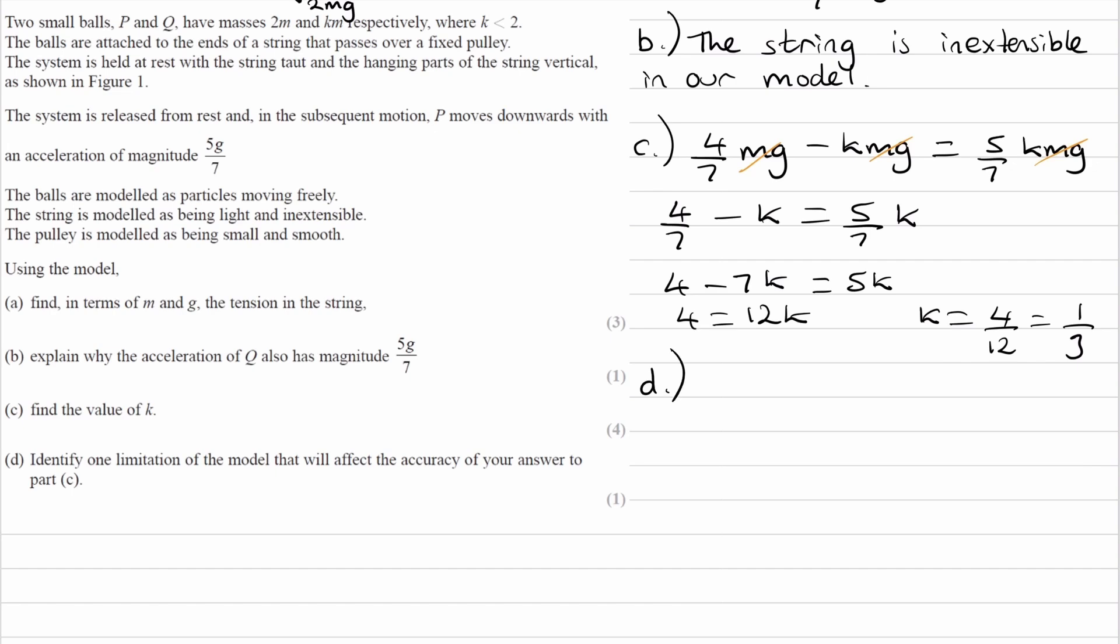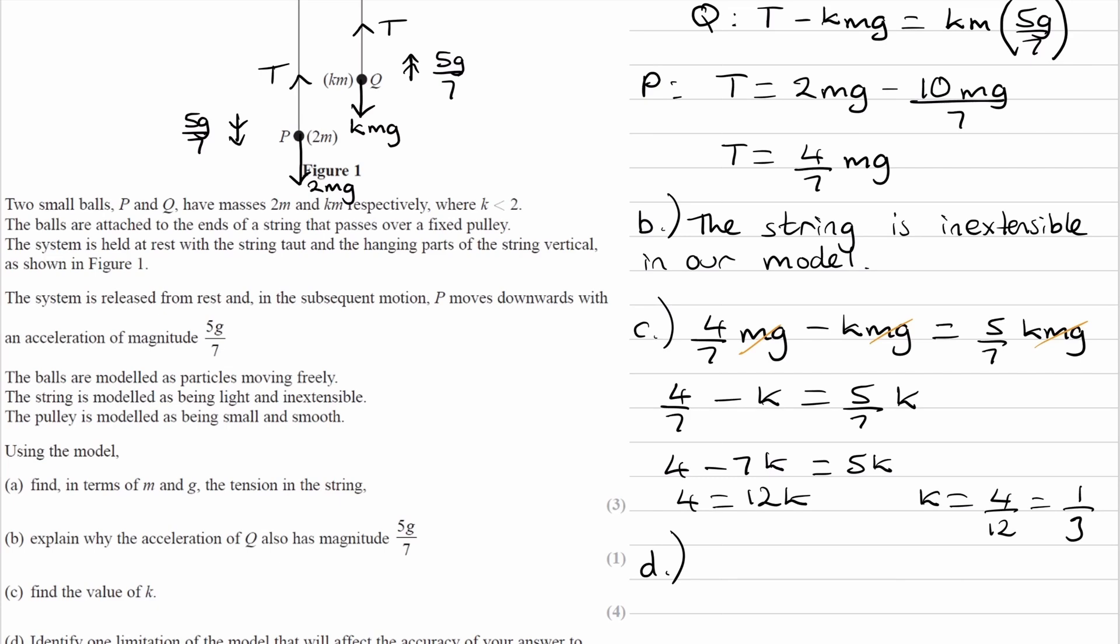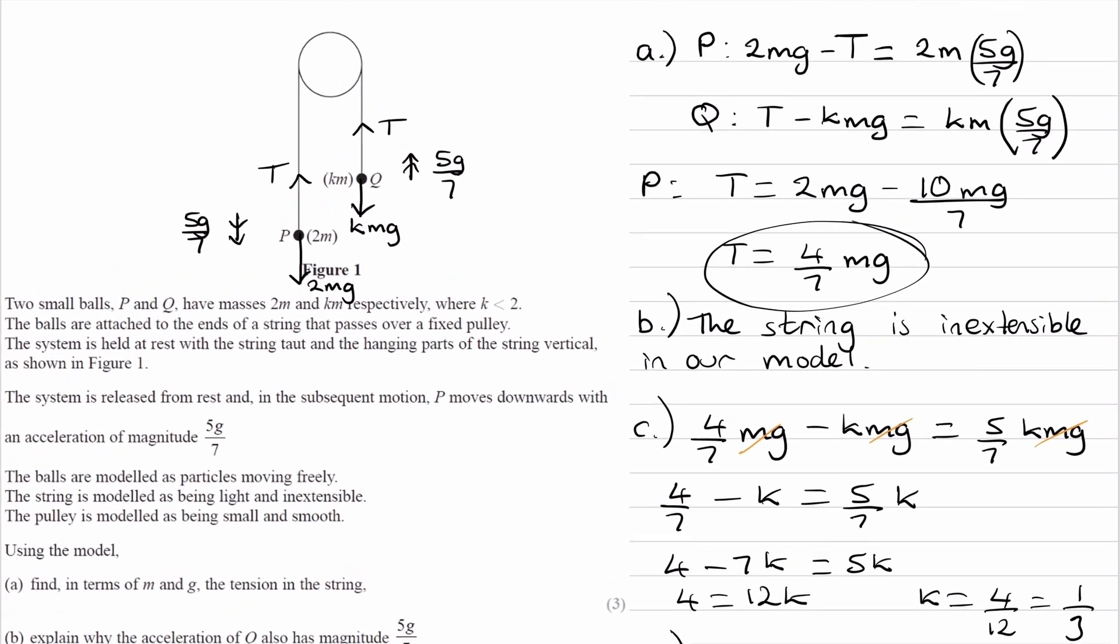For part d, identify one limitation of the model that will affect the accuracy of your answer to part c. Okay, so let's think about what we did in part c. In part c, we used our tension that we worked out from part a. We got that tension from the motion of P, the equation of motion of P. We then subbed that into the equation of motion of Q. So let's try and think about what are the assumptions that we had that enabled us to do that. Well, one of them is that we assumed the tension in P, or acting on P, is the same as the tension acting on Q. If that weren't the case, we wouldn't have been able to have subbed this into there. So we're assuming the tensions are the same.